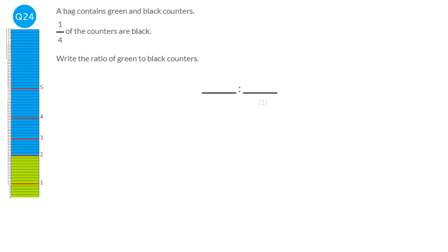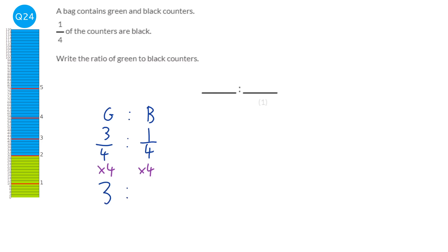We write this as a ratio between fractions — green to black. A quarter of the counters are black, so three quarters are green. On both sides of the ratio we multiply by four: three divided by four times four gives 3, and one divided by four times four gives 1. This might surprise people who think it's four to one, but we can show it's a ratio of three to one.